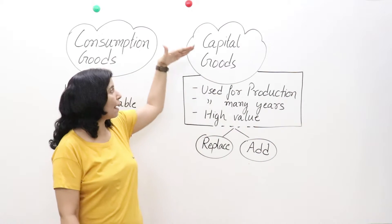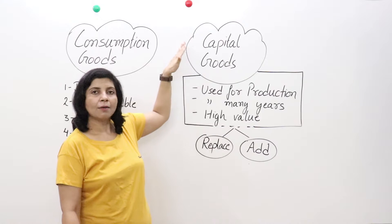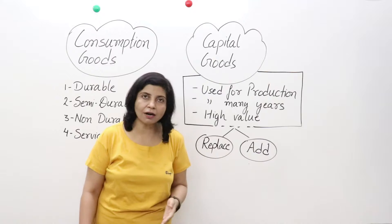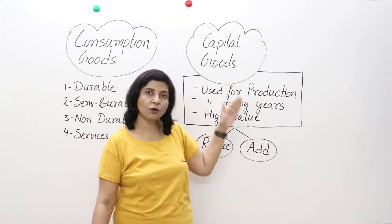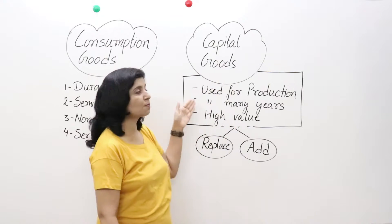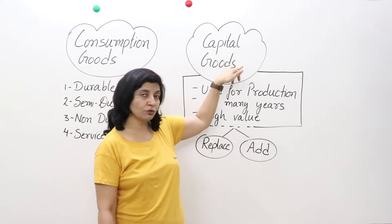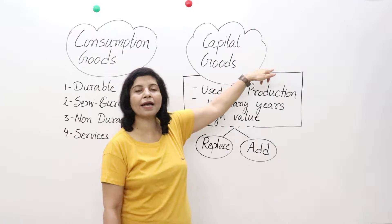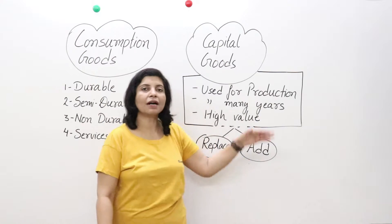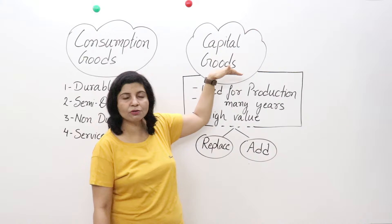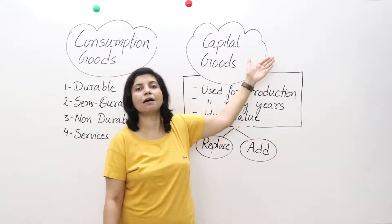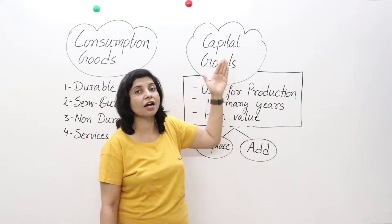Next we come to capital goods. Capital goods are goods like plant and machinery, used by producers of goods and services. They are purchased by producers only, and they are used to produce goods and services to gain profit. When we use consumption goods we gain satisfaction, but when capital goods are used, they produce goods and services which can be sold in the market to earn profit.